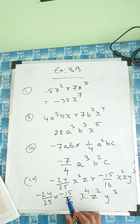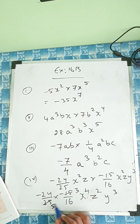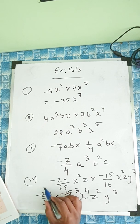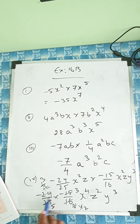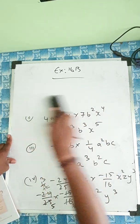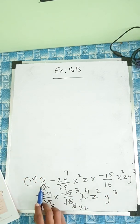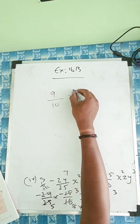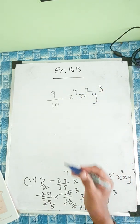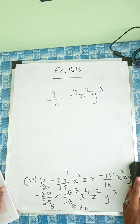Now we can cut: minus into minus is plus. Cut by 5: 15 divided by 5 is 3, 25 divided by 5 is 5. Cut by 2: 16 divided by 2 is 8, 24 divided by 2 is 12. Cut by 4: 8 divided by 4 is 2, 12 divided by 4 is 3. Cut again by 2: getting 3 on top and 5 times 2 on the bottom. So 3 times 3 is 9, divided by 10. The answer is 9 by 10 x to the power 4, z squared y cubed.